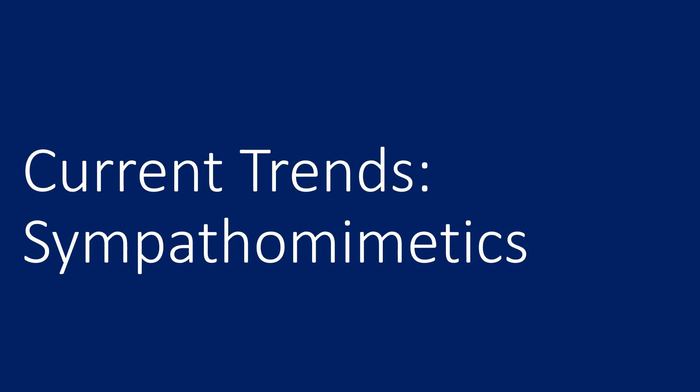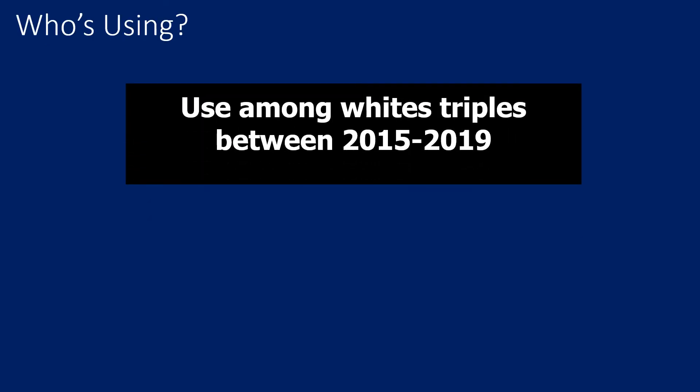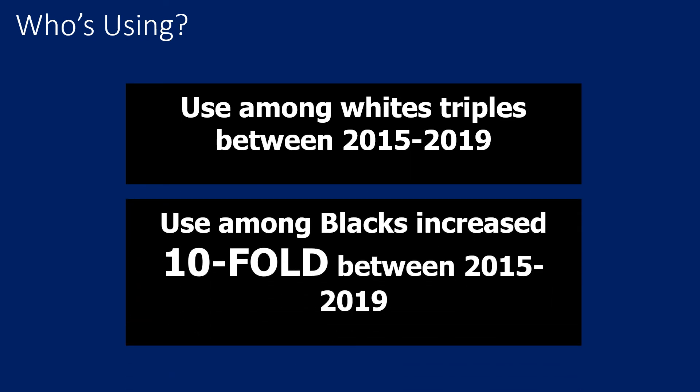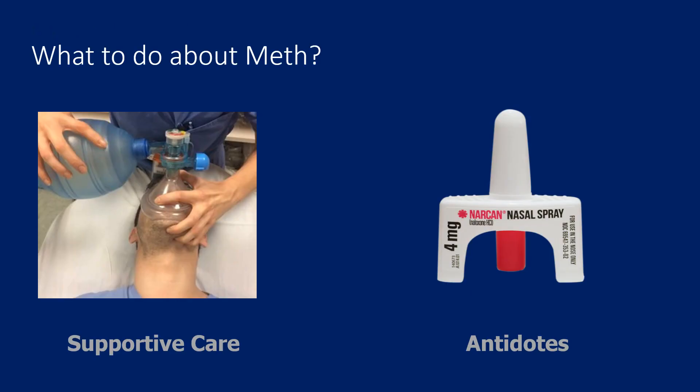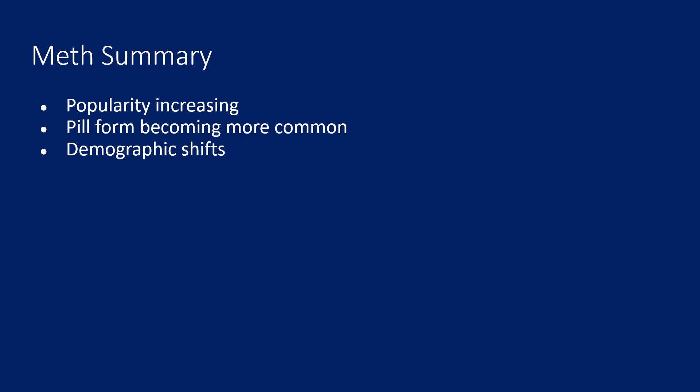Let's shift gears to some sympathomimetics. Meth is back. In New Jersey, methamphetamine-related toxicity and seizure of drug specimens is really going up. It's more in pill form, and we're seeing a lot more meth, so keep an eye out for that. The demographic of methamphetamine use is also shifting — use among whites has increased by triplicate between 2015 and 2019, but use among blacks is actually increasing tenfold. Overall use is increasing across everyone, so look out for methamphetamine. Treatment is supportive care — Narcan is not going to help you here.